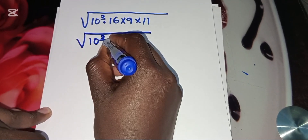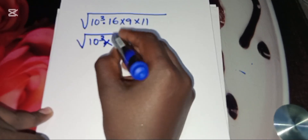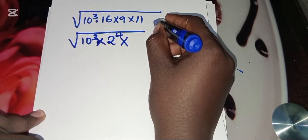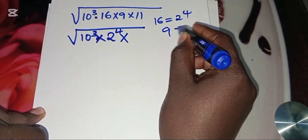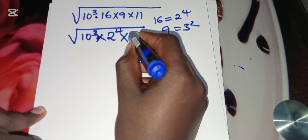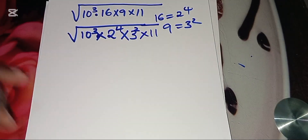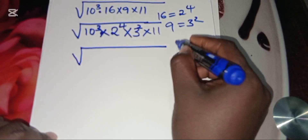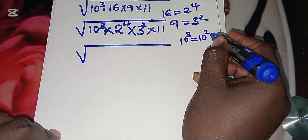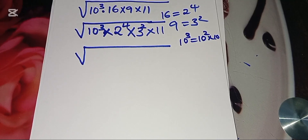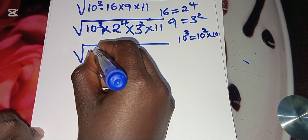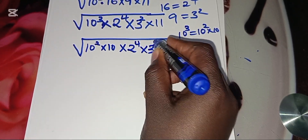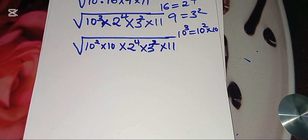We express 16 as 2 raised to power 4, and 9 as 3 squared, giving us 10 cubed times 2 raised to power 4 times 3 squared times 11. We also express 10 cubed as 10 squared times 10, so we have 10 squared times 10 times 2 raised to power 4 times 3 squared times 11.